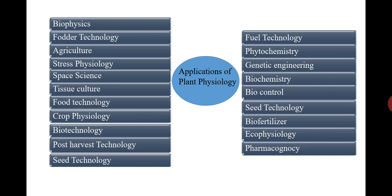Biofertilizers are living organisms which perform functions of nitrogen fixation or phosphate solubilization, increasing the yield and production of crops. Plant physiology helps explain how biofertilizers work — whether they are symbiotic or non-symbiotic — and how they increase production.